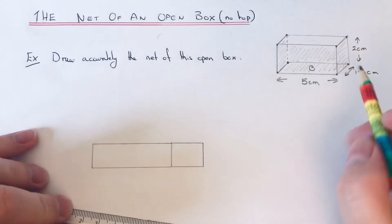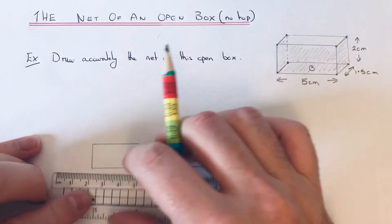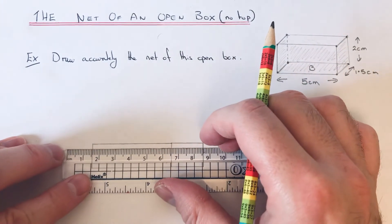And that face is the same as the one on the left side of the box, so again we just need to go out 2 centimeters.